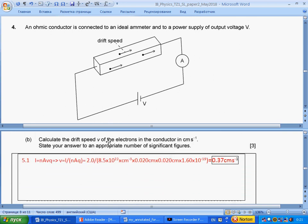Calculate the drift speed v of the electrons in the conductor in cm s⁻¹. State your answer to appropriate number of significant figures. Section 5.1: Current is linked to drift velocity. Formula for drift velocity. Here, we keep density in centimeters per centimeter cubed, and width and length in centimeters. As result, we get centimeters per second.